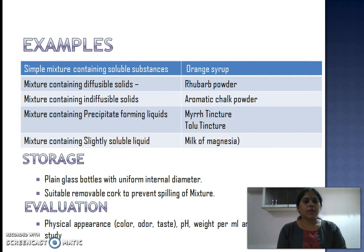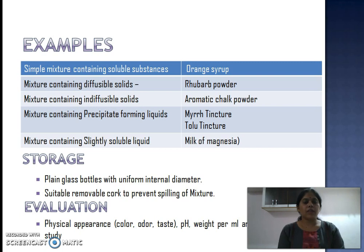Examples of mixtures: simple mixture containing soluble substance — orange syrup; mixture containing diffusible solids — rhubarb powder; mixture containing indiffusible solids — aromatic chalk powder; mixture containing precipitate-forming liquids — myrrh tincture or tolu tincture; mixture containing slightly soluble liquid — milk of magnesia. Mixture should be stored in plain glass bottles with uniform internal diameter, with a suitable removable cork. It should be evaluated for physical appearance, color, odor, taste, pH, weight per ml, viscosity, and stability.